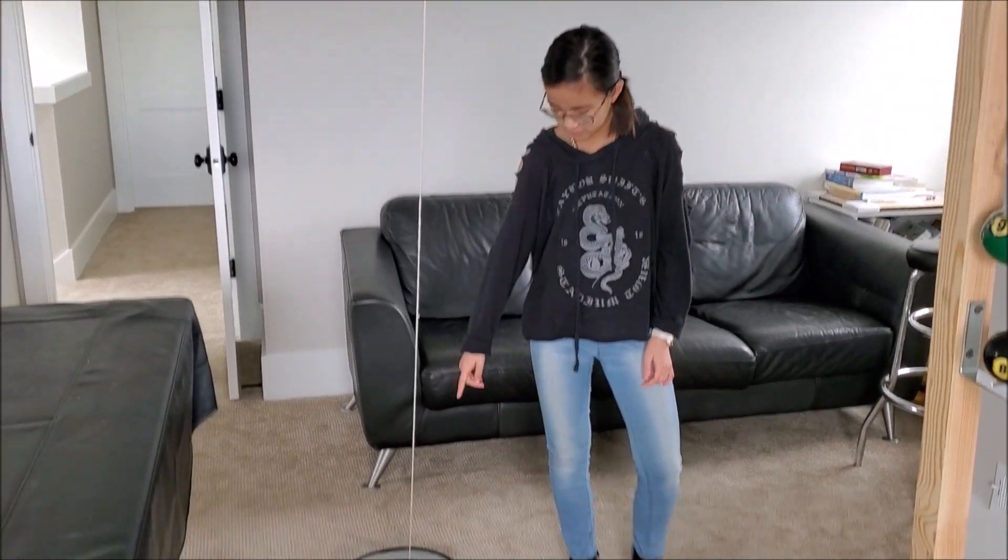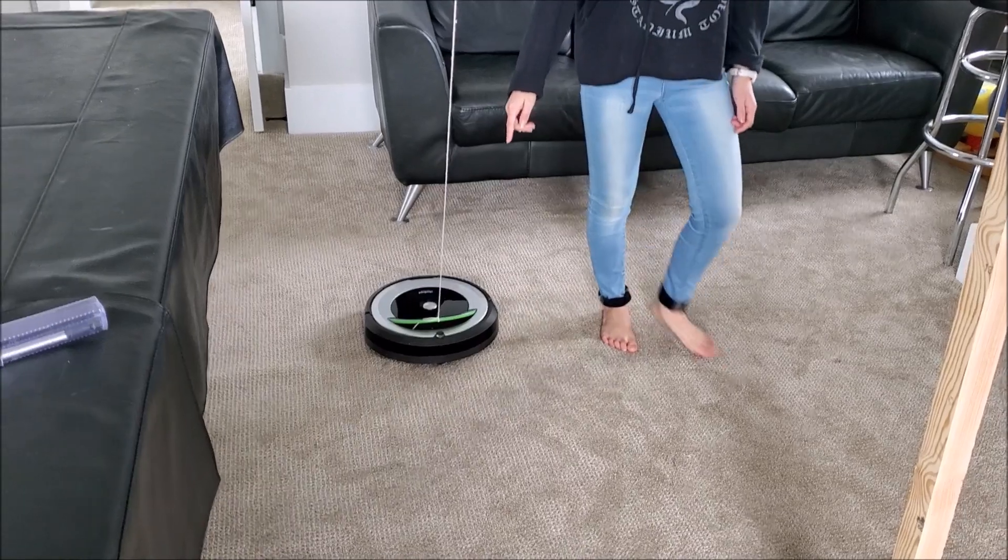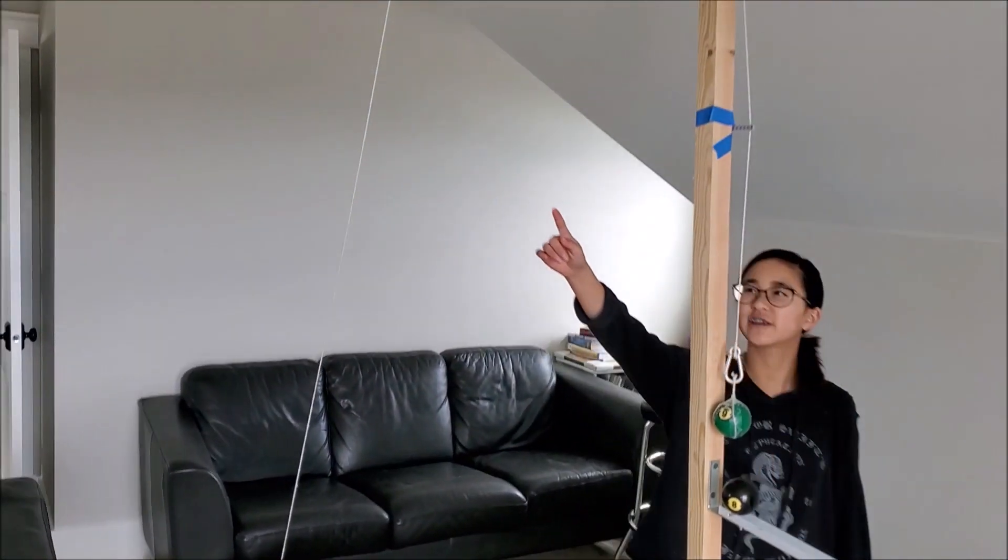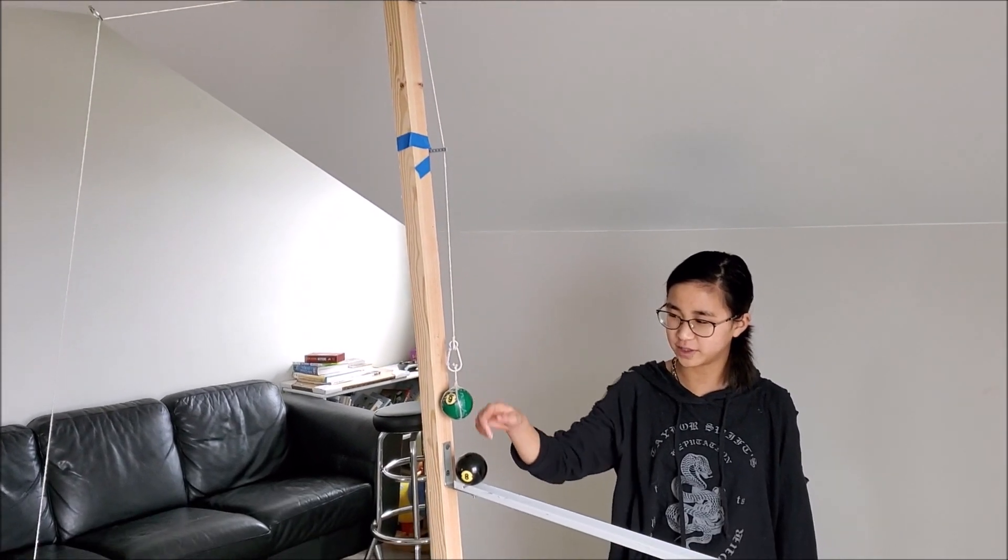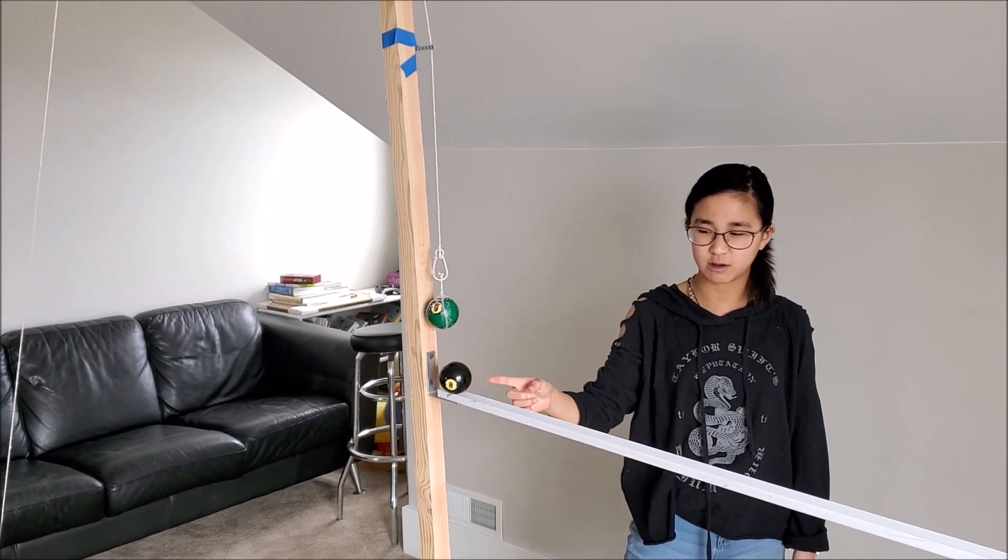It's going to start with our robot vacuum moving forward, and as the string gets slack, this green ball will lower and bump into the black ball.